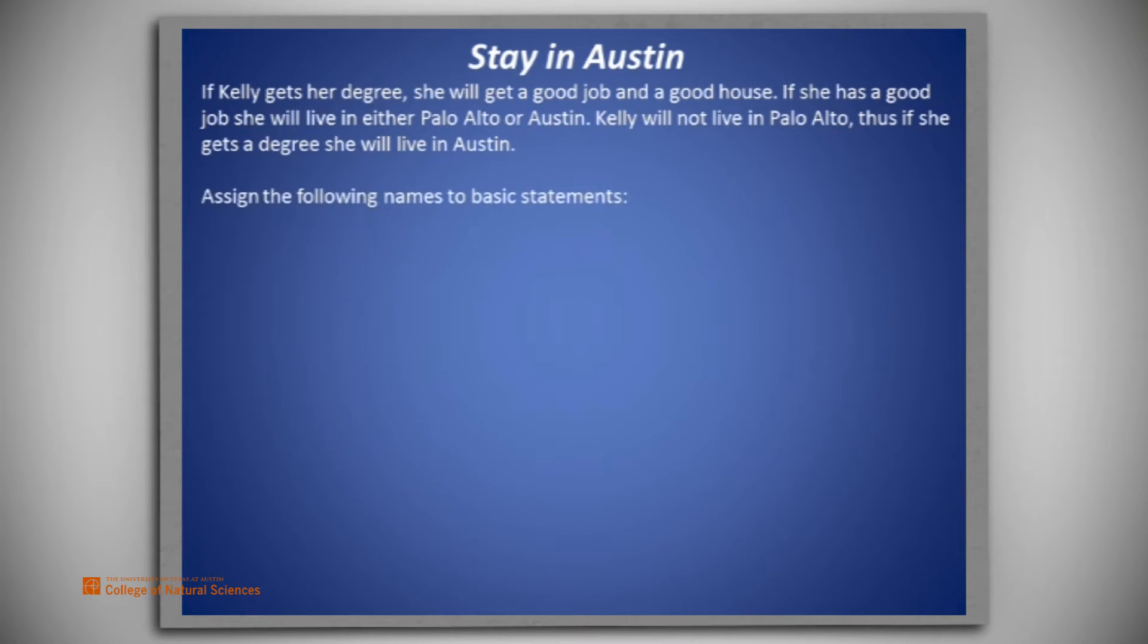We begin by assigning these names to basic statements. D represents Kelly gets her degree. J represents Kelly will get a good job. H represents Kelly will get a good house. P represents Kelly will live in Palo Alto, and A represents Kelly will live in Austin.